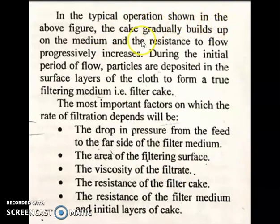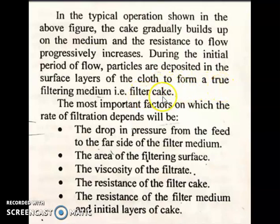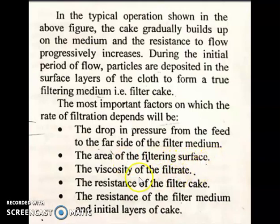In the typical operation shown in the figure, the cake gradually builds up on the medium and the resistance to flow progressively increases. During the initial period of flow, particles are deposited in the surface layers of the cloth to form a true filtering medium — the filter cake. The most important factors on which the rate of filtration depends are: the drop in pressure from the feed to the far side of the filter medium, the area of the filtering surface, the viscosity of the filtrate, the resistance of the filter cake, the resistance of the filter medium, and the initial layers of cake.